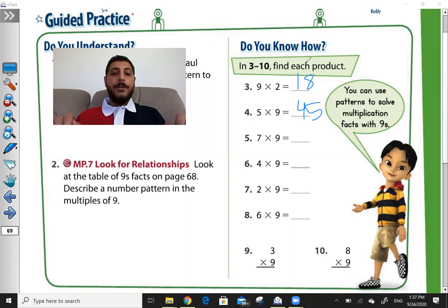Question number 5, 7 times 9. As I said, it starts from the left. Where is the finger number 7? 1, 2, 3, 4, 5, 6, 7. I close it.